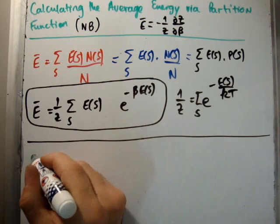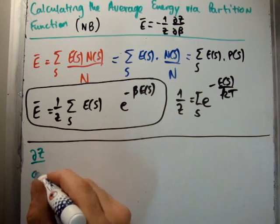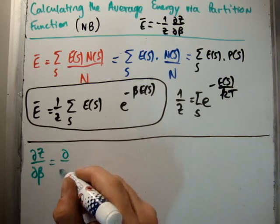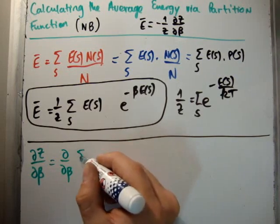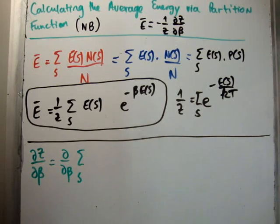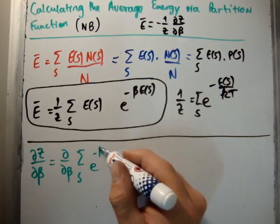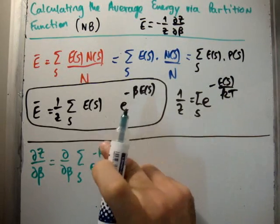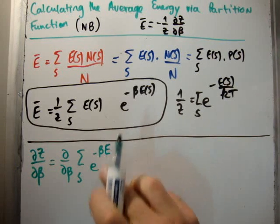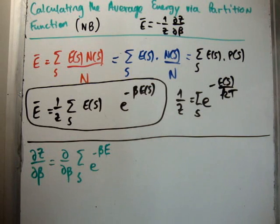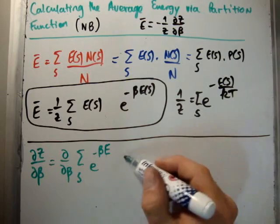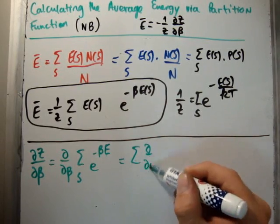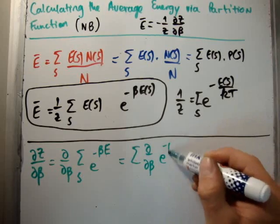First of all, let's get del z del beta, where beta is equal to 1 over kt. Well, that's going to be del del beta of the sum over s of e to the minus beta epsilon. I'm going to get rid of the subscript, I'm going to get rid of the s part. Well, that's a pretty straightforward derivative. You can bring the derivative inside: del del beta, e to the minus beta E.